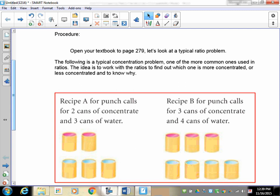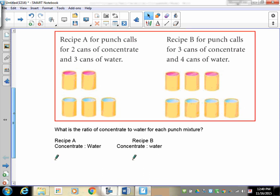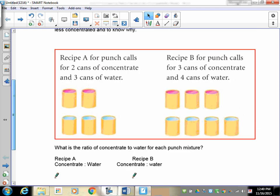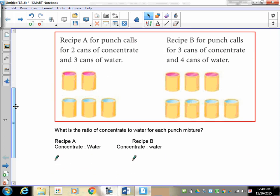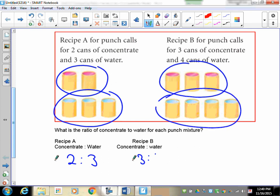So the following is a typical concentration problem, one of the more common ones used in ratios. The idea is to work out the ratio to find out which one is more concentrated or less concentrated and to know why. Take a look at the two things, this is from page 279 of your textbook. Recipe A calls for the punch and it has two cups of concentrate and three cups of water.